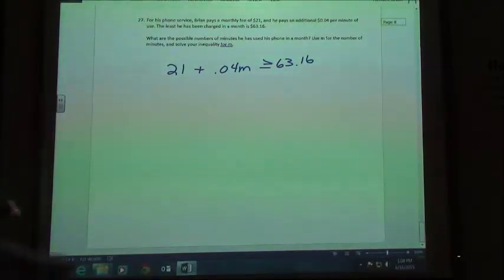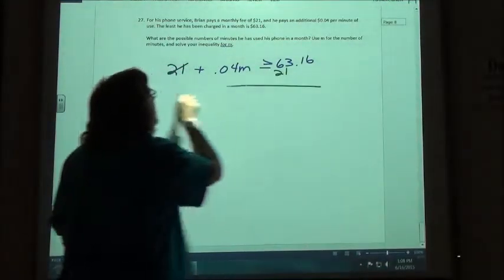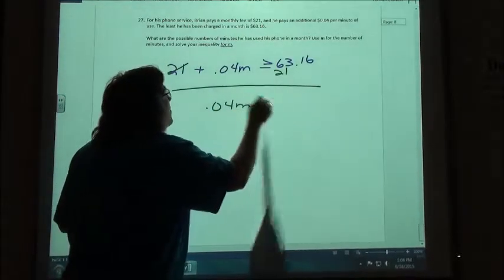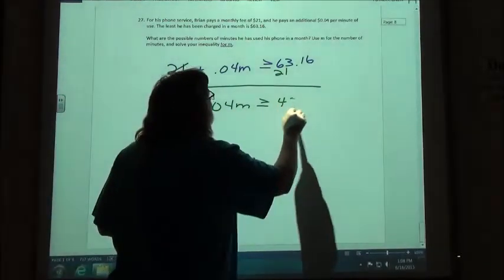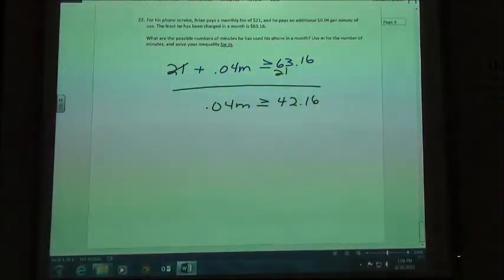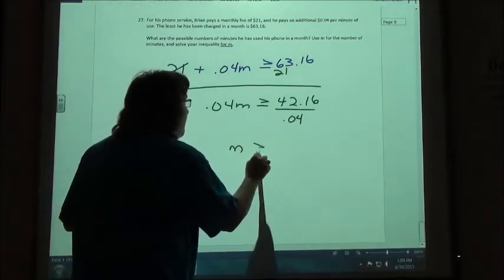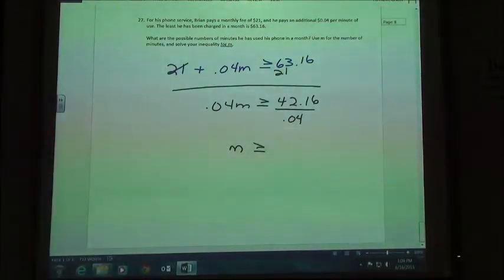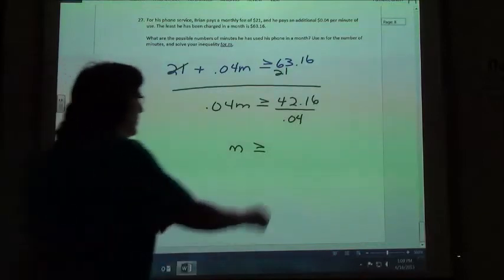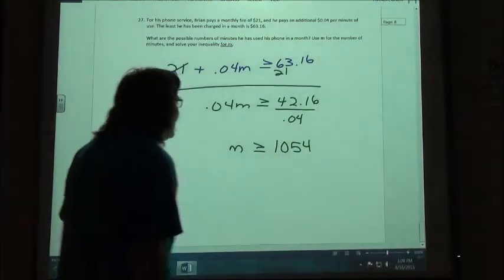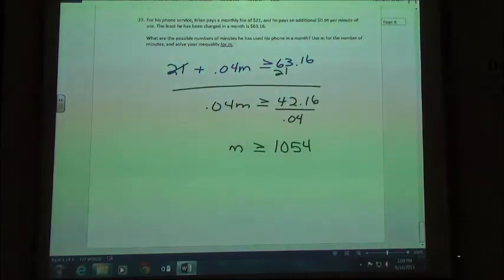And so first thing we're going to do is subtract our 21. 0.04M is going to be greater than or equal to $42.16 if I just go ahead and subtract that and then I'm going to divide by 4 cents. So 4216 divided by 0.04. 1,054? Yep. So M is greater than or equal to 1,054.